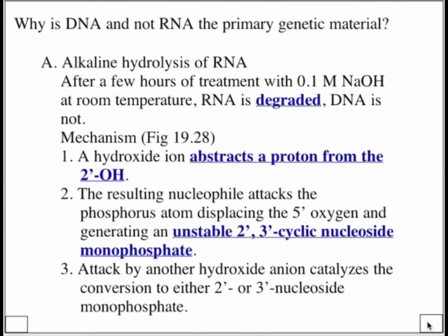We're going to look at a picture of this in just a moment. But let's just write down the last step here. Attack by then another hydroxide anion catalyzes the conversion of this 2,3 cyclic nucleoside monophosphate intermediate, very unstable. It will catalyze the conversion of that molecule to either the 2 prime or the 3 prime nucleoside monophosphate.